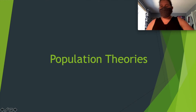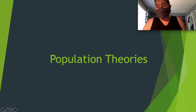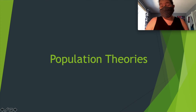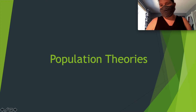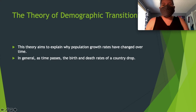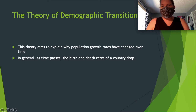In this lecture we're going to discuss population theories. Today specifically we're going to talk about the Theory of Demographic Transition. This theory basically aims to explain why population growth rates have changed over time.